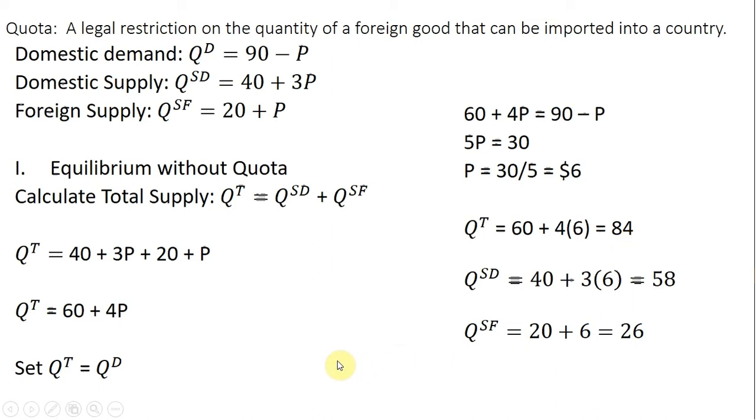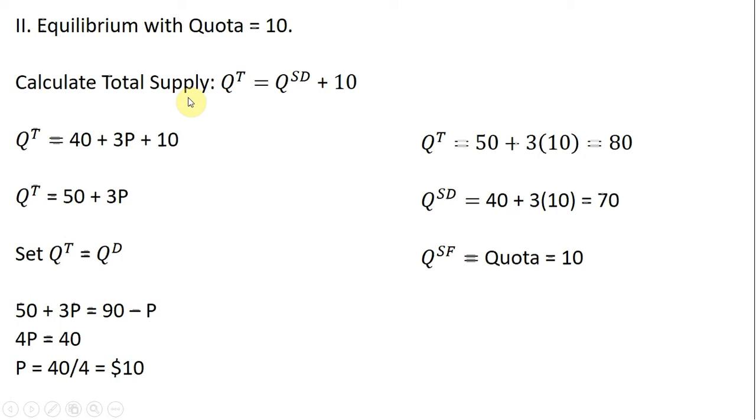All right, moving on to step two. In step two, we are going to impose a quota. We're only going to allow foreign producers to bring no more than 10 units to the domestic market. So the quota is set at 10.